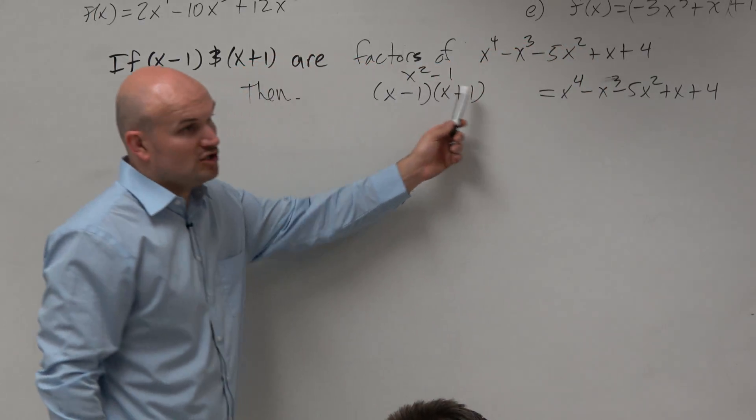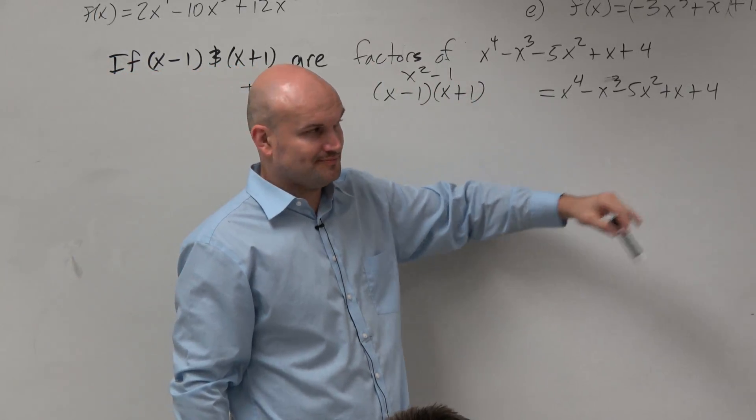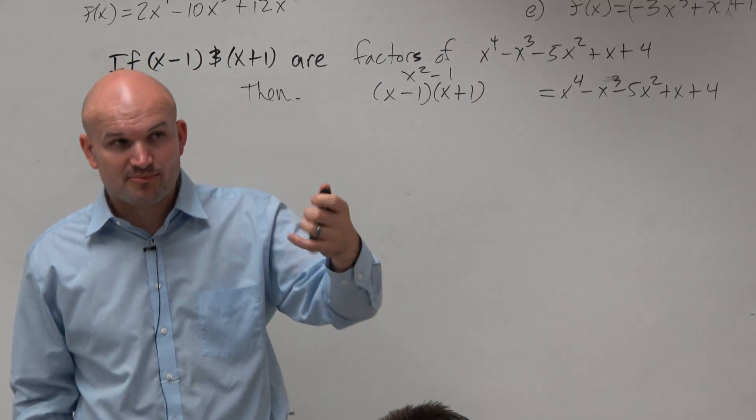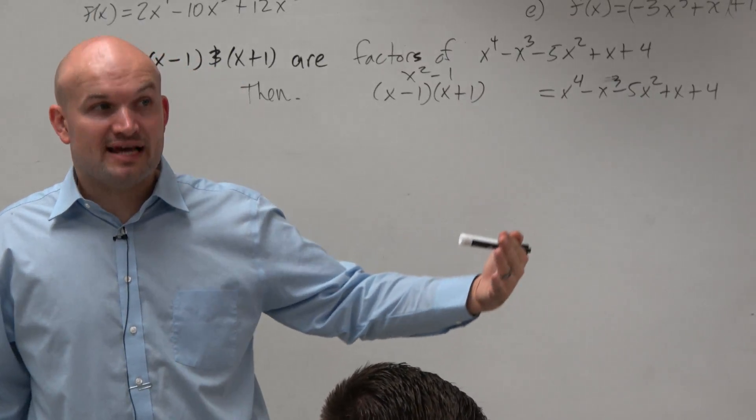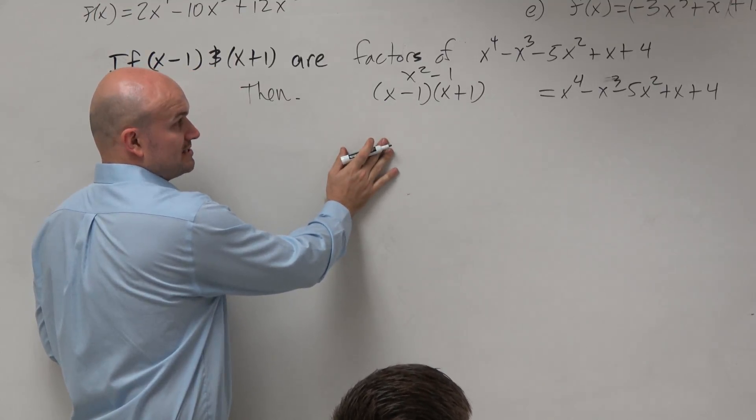So what we can do is we could multiply these two factors to give us this, and then we could use long division to find our other factors. However, what I'm going to do is I'm going to practice us using synthetic division here. So what we're going to want to do is we're going to want to factor this twice, all right?